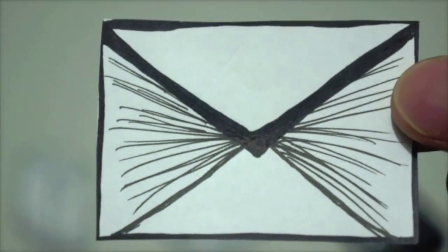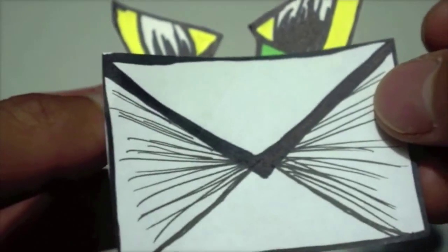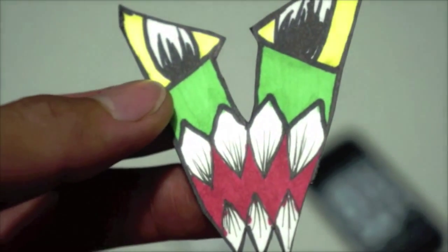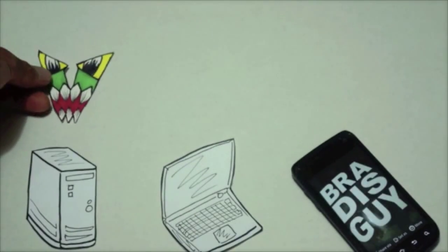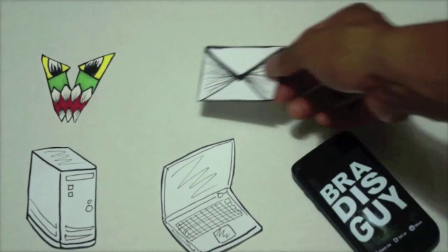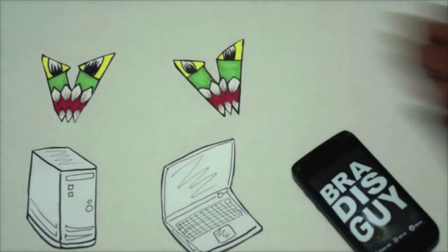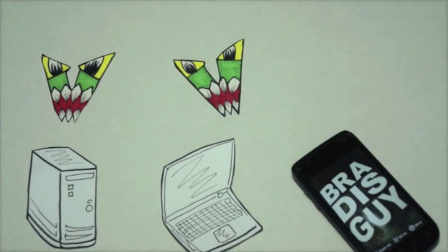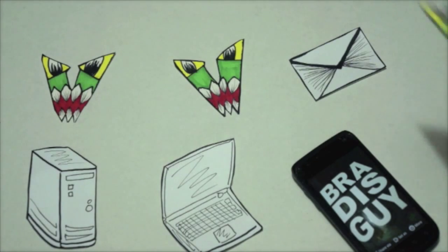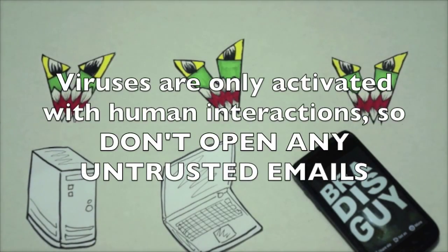A computer virus, for example, whenever you open an untrusted email with a virus inside, that virus will corrupt your computer. The same thing goes with your laptop and also with your smartphone. Remember, viruses are activated only with human interactions.